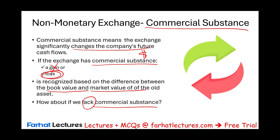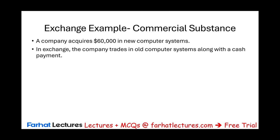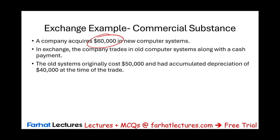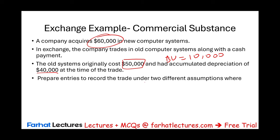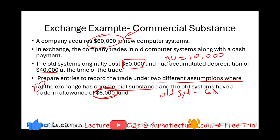Let's look at an example. A company acquires a sixty-thousand-dollar computer system; in exchange the company trades the old computer system plus cash. The new system costs sixty thousand. The old system has a cost of fifty thousand and accumulated depreciation of forty thousand, giving a book value of ten thousand. We will prepare entries under two assumptions. Under the first scenario, the seller gives six thousand dollars for the old system — so the fair market value of the old system is six thousand, and the book value is ten thousand, resulting in a loss of four thousand.